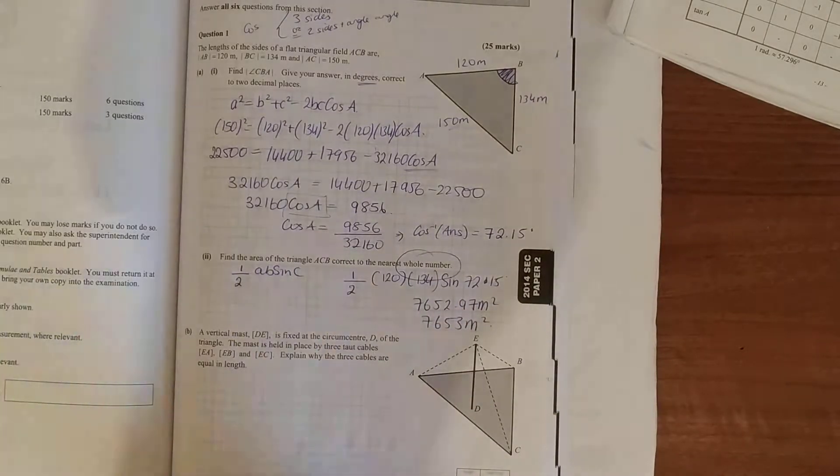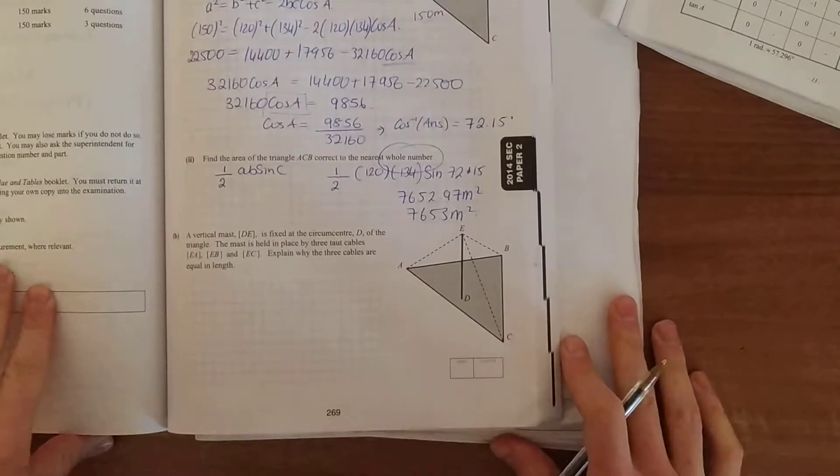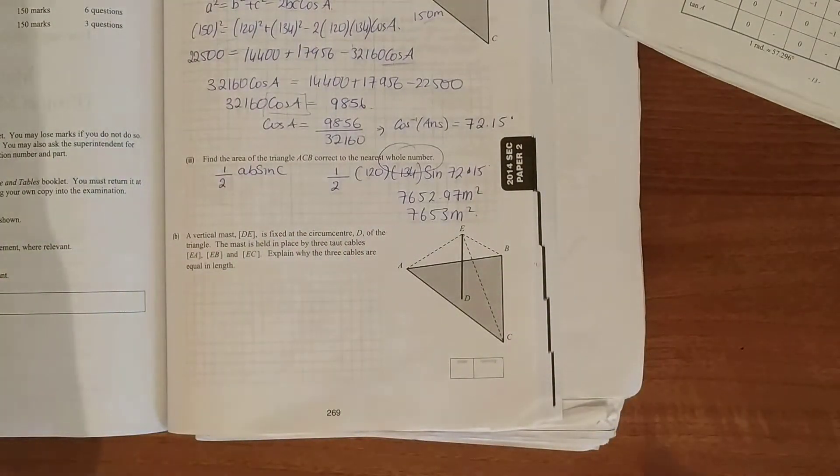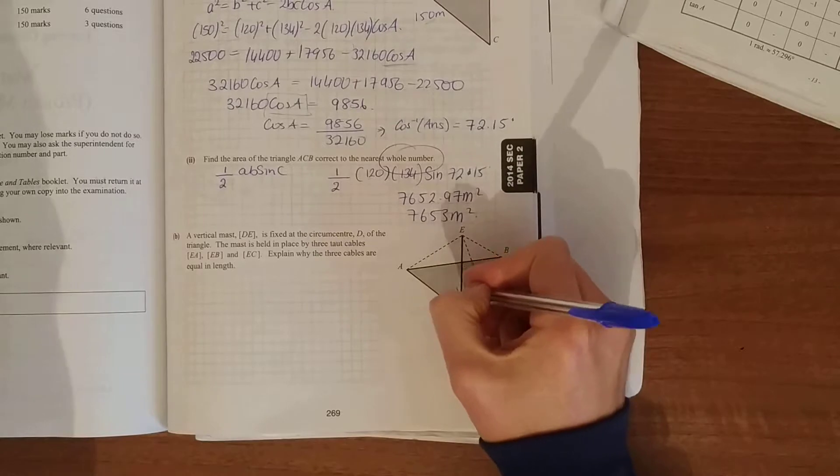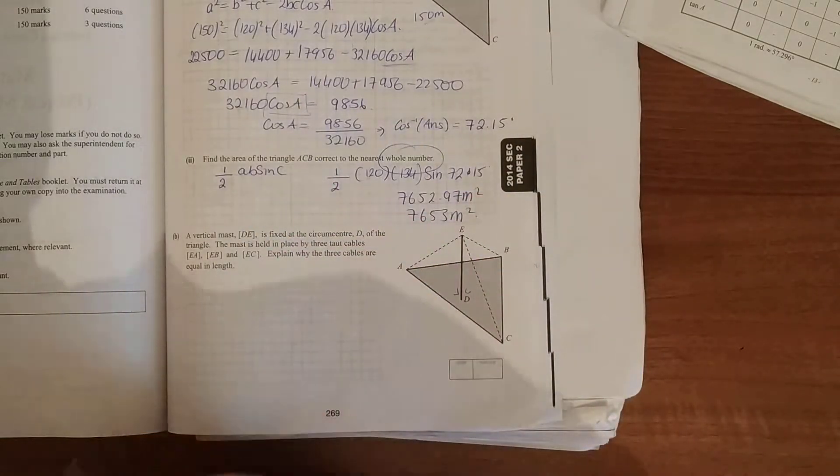And the last bit: the vertical mast DE. Once we see it's vertical, it's forming right angle triangles down there.